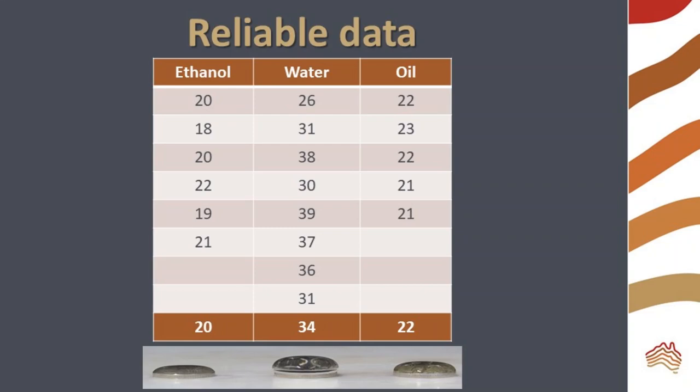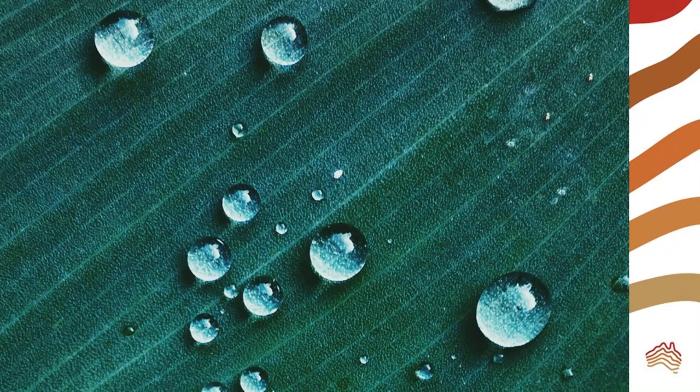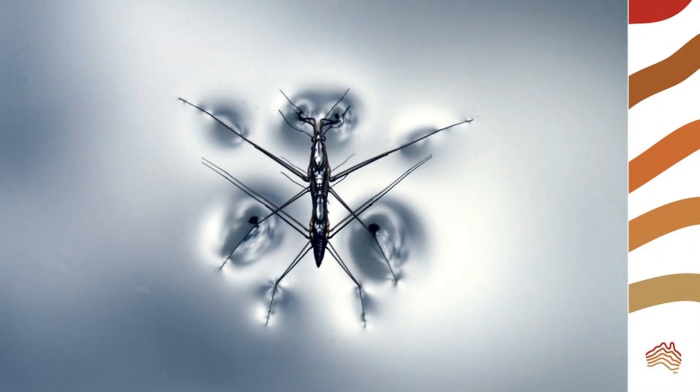Water has a much higher number of drops, reflecting its greater surface tension. Surface tension causes water to form spherical droplets and allows some small animals, like this insect, to walk across the surface of water.